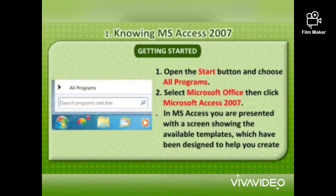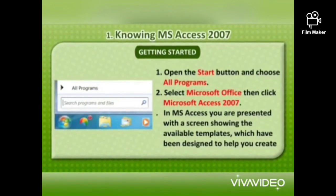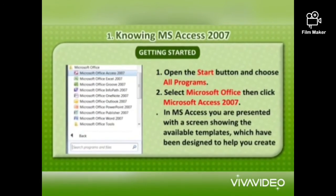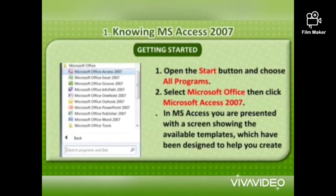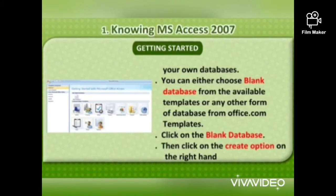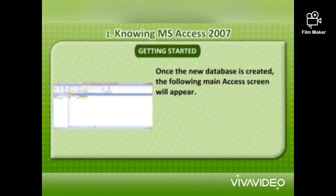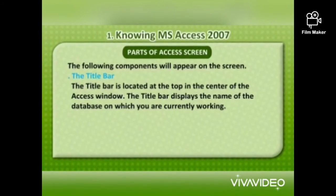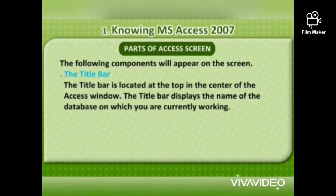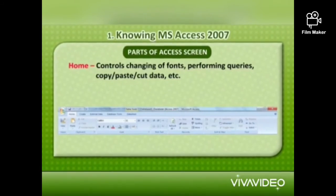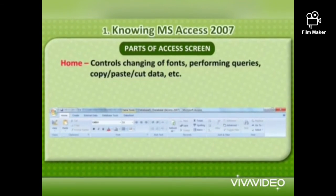How to get started with MS Access? To open MS Access, first open the Start button and choose All Programs. Then select Microsoft Office and click Microsoft Access 2007. In MS Access, you are presented with a screen showing available templates, which have been designed to help you create your own database. You can either choose Blank Database or any other form of database from Office.com templates. Click on Blank Database and then click on the Create option on the right-hand side. Once the new database is created, the main MS Access screen will appear.